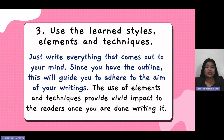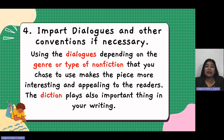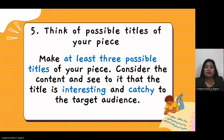Third, use the learned styles, elements, and techniques. Write everything that comes out of your mind. Since you have the outline, this will guide you to adhere to the aim of your writing. The use of elements and techniques provides a vivid impact to the readers once you are done writing. Fourth, impart dialogues and other conventions if necessary. Using dialogues, depending on the genre or type of non-fiction you choose, makes the piece more interesting and appealing to readers. Fifth, think of possible titles for your piece — make at least 3 possible titles. Consider the content and see to it that the title is interesting and catchy to the target audience.